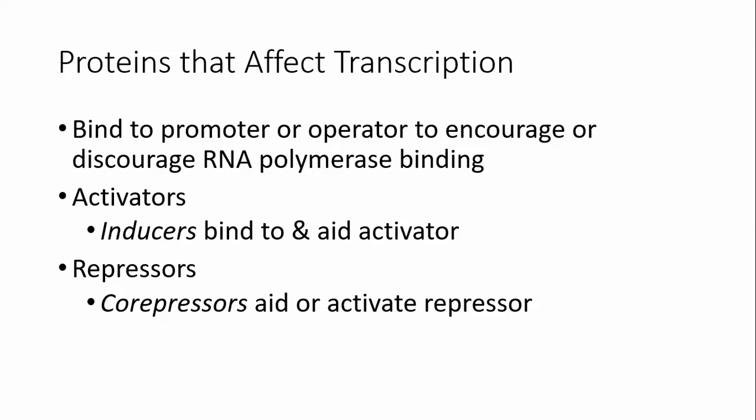Activators and repressors are involved in helping to regulate gene expression. They bind to either the promoter or the operator in order to affect how RNA polymerase binds. Activators also have other molecules associated with them called inducers, which can bind to and increase the activity of an activator, or make it more likely that it's going to attach to the promoter or operator in the operon. Co-repressors are molecules that help out repressors — a lot of times repressors are floating around inactive, but in the presence of a specific co-repressor molecule, it changes their shape enough that they can attach to the operon and actively repress transcription of genes.